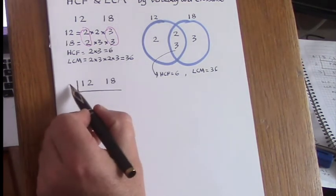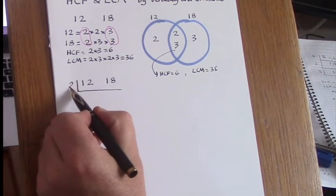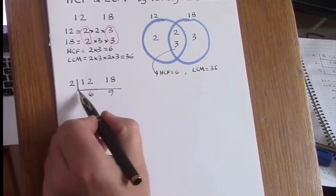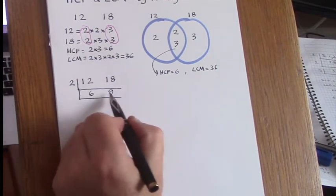If we say 2 goes into both of these, that goes 6 times, and 2 into 18 is 9. We can further divide 6 and 9 by 3, giving 2 and 3.